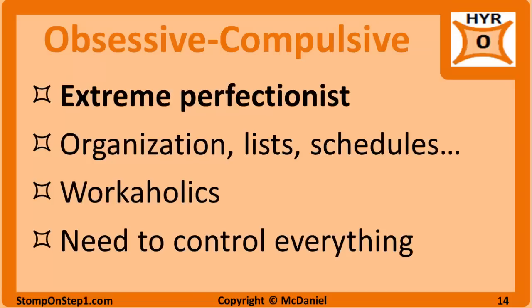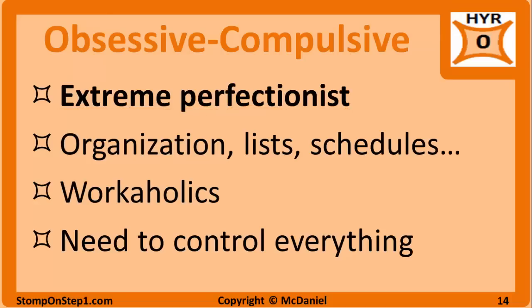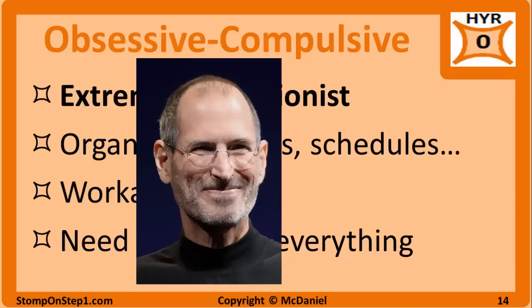People with obsessive-compulsive personality disorder are extreme perfectionists to the point that it can hinder their ability to complete tasks. Organization, lists, schedules, and small details are highly valued. They are overly devoted to their work and rarely take leisure time. They become upset if they cannot control their environment and the people around them. People with OCPD can have academic and occupational success in the right setting. An example would be Steve Jobs — his attention to detail was a big part of his success, but he was notoriously difficult to work for because he insisted on controlling everything.